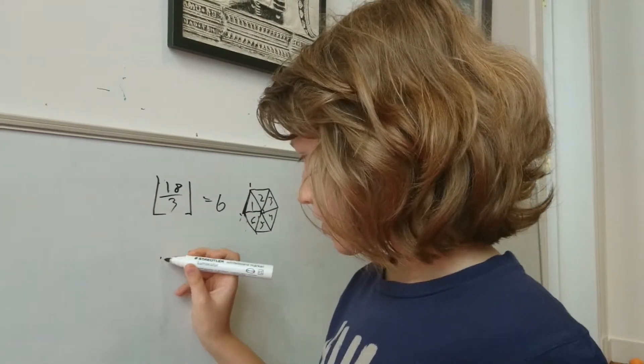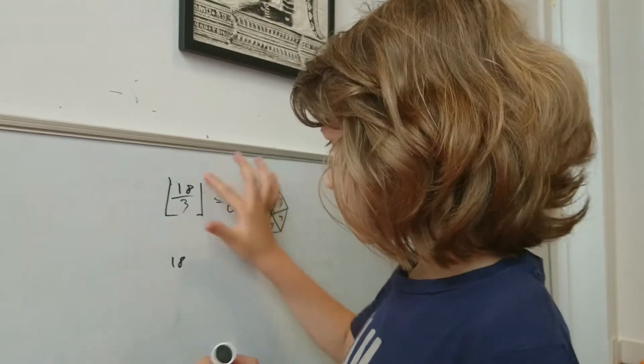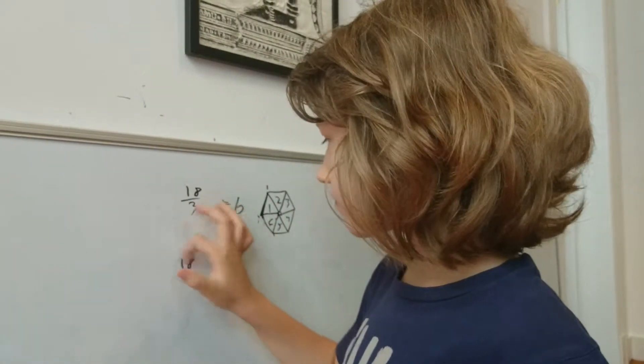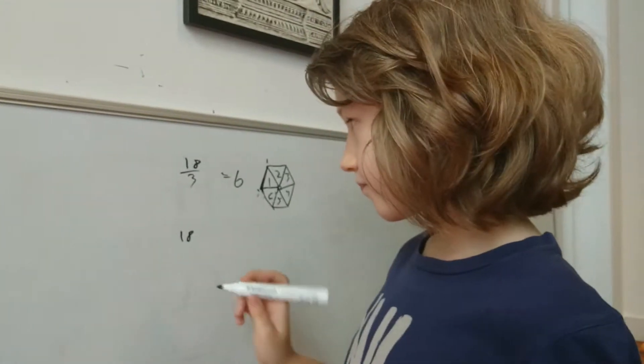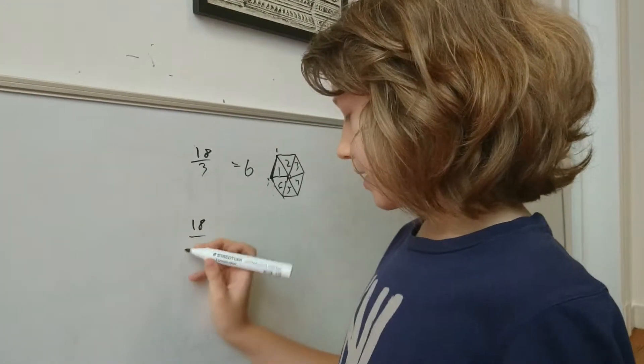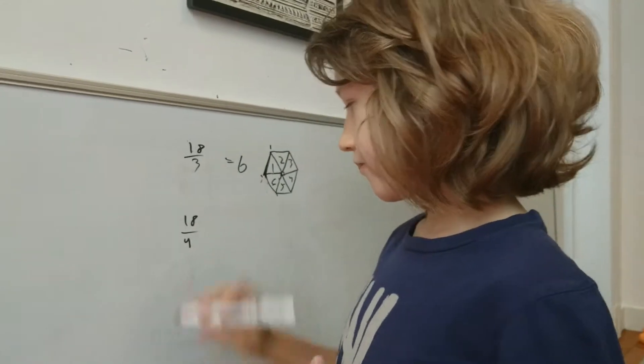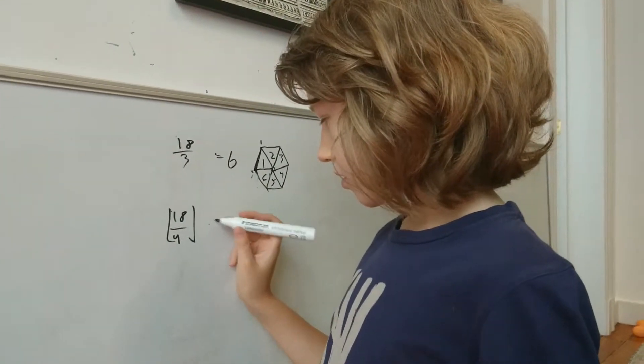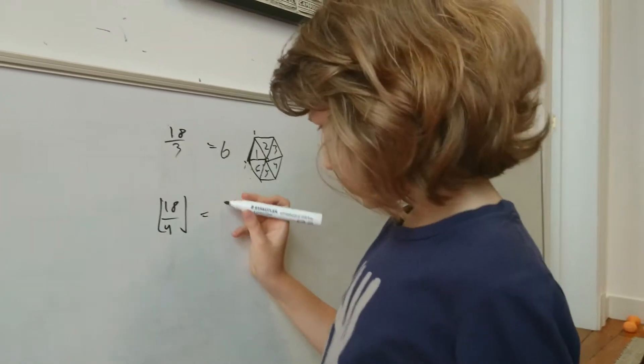No. Maybe you should write a little bit larger numbers because this is so tiny for the video. So, 18 divided by 4, round it down, is equal to 4.